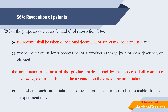Section 64, Subsection 2: For the purpose of Clauses E and F of Subsection 1, no account shall be taken of personal document, secret trial, or secret use. And where the patent is for a process or a product made by the process described or claimed, the importation into India of the product made abroad by that process shall constitute knowledge or use in India of the invention on the date of importation. That is, importation is not allowed, except where such importation has been for the purpose of reasonable trial or experiment only — other than that, no patent shall be granted if the product or the process for making the product has been imported into India from outside.